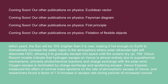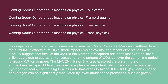Recent models indicate that hydrogen escape on Venus is almost entirely due to superthermal mechanisms, primarily photochemical reactions and charge exchange with the solar wind. Oxygen escape is dominated by charge exchange and sputtering escape. Venus Express measured the effect of coronal mass ejections on the rate of atmospheric escape of Venus, and researchers found a factor of 1.9 increase in escape rate during periods of increased coronal mass ejections compared with calmer space weather.